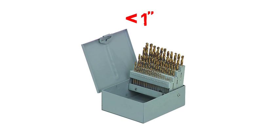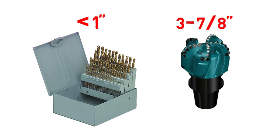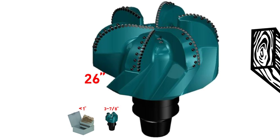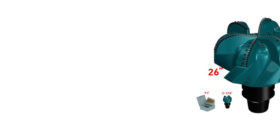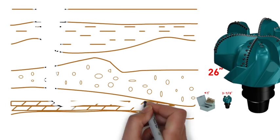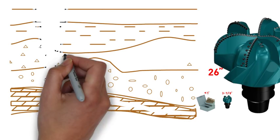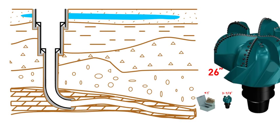Unlike what you might find at the hardware store, oil and gas drill bits are much bigger — from just a few inches to a few feet in diameter. Different sized bits are used to drill different sized holes, and the sizes needed are determined by the formation properties in the well plan.